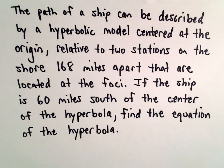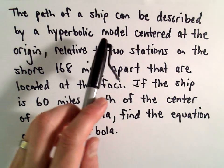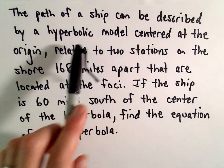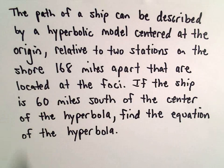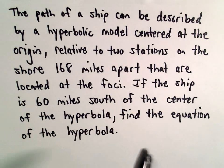Alright, in this example we're going to find an equation for a hyperbola in a bit of a word problem here. The idea is we've got a ship, and the path of the ship can be described by a hyperbolic model that's centered at the origin, and that's going to be relative to two stations on the shore that are 168 miles apart.